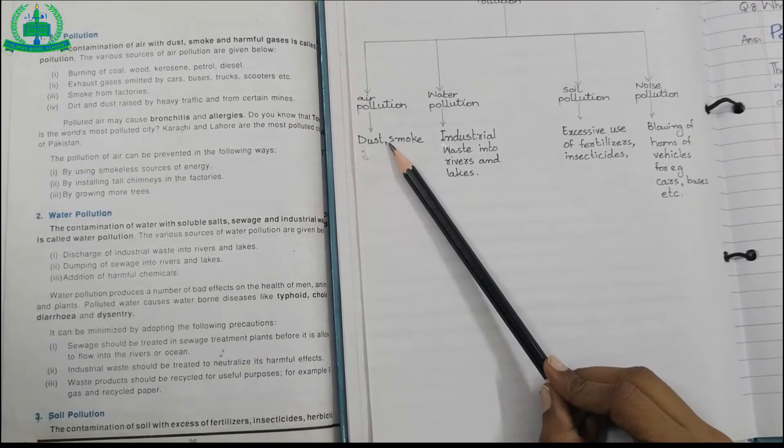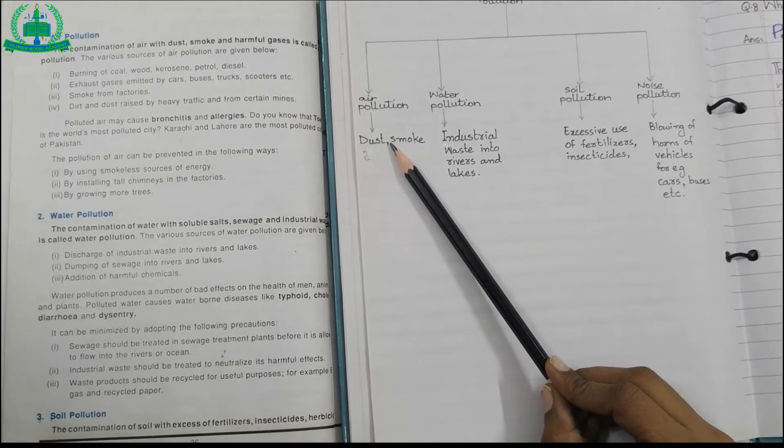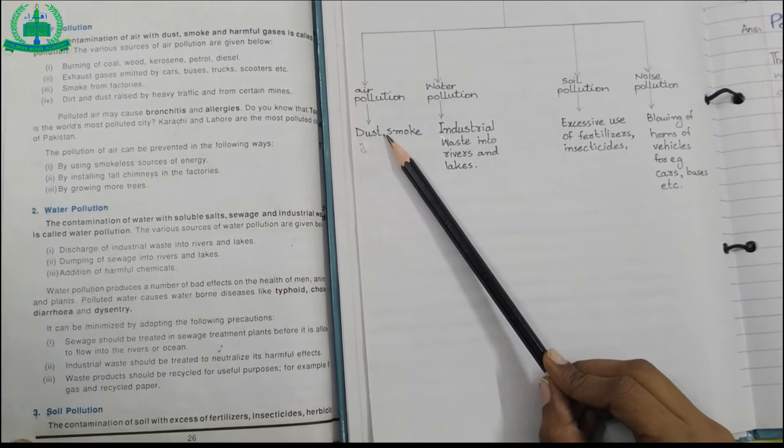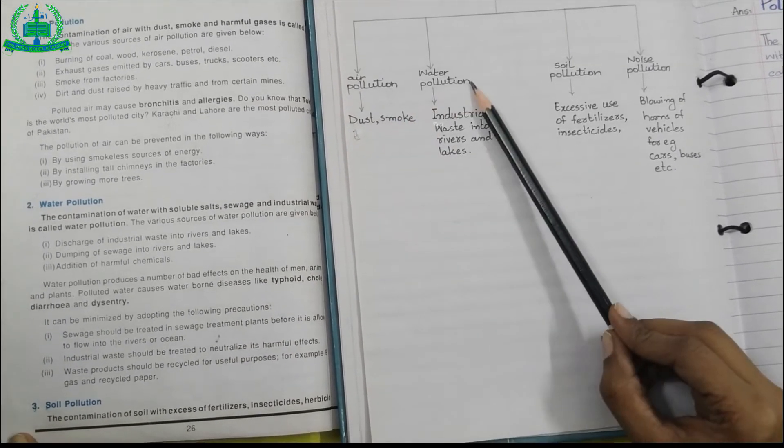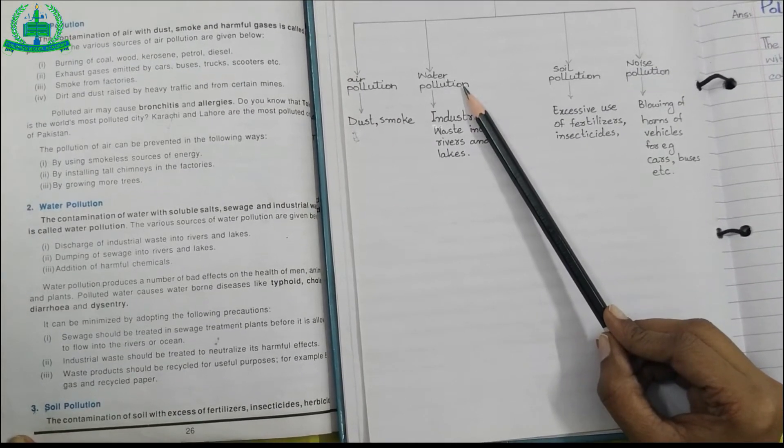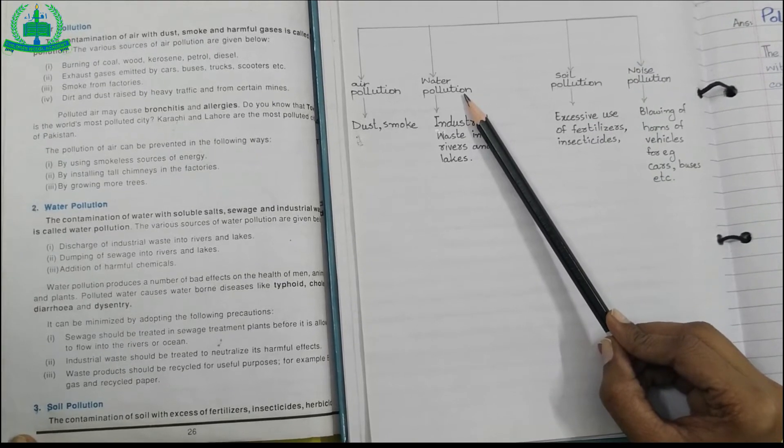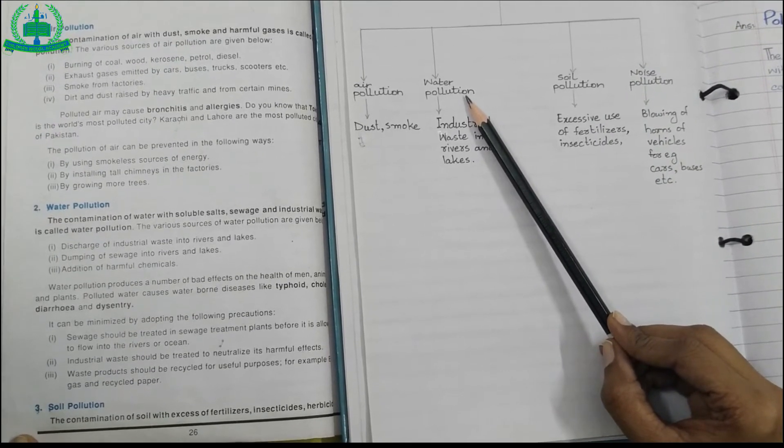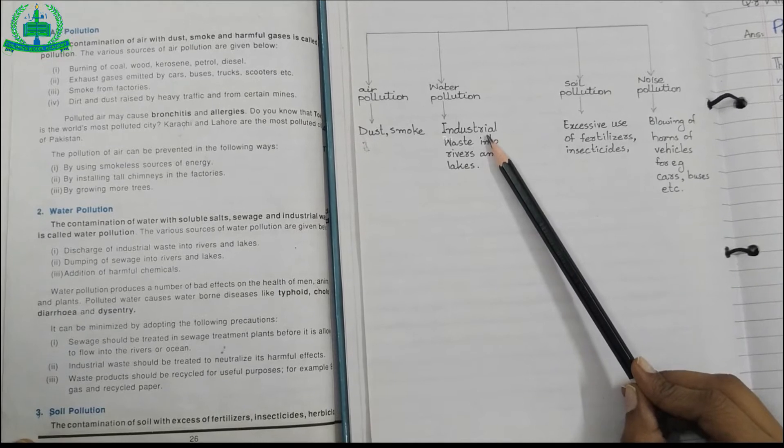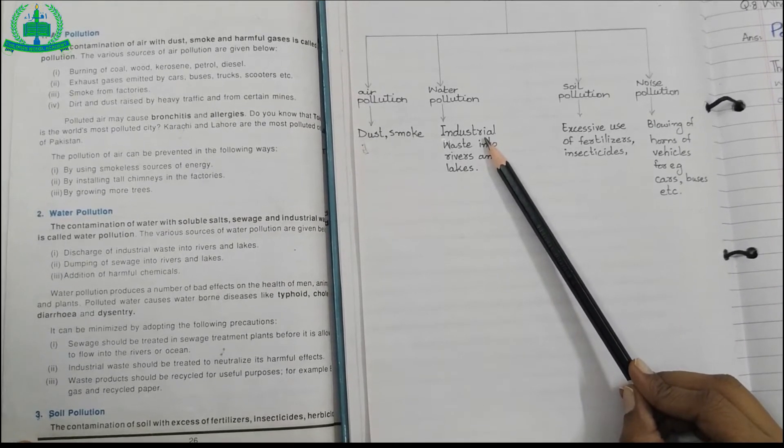Water pollution is the contamination of water with soluble salt, sewage, and industrial waste. For example, discharge of industrial waste into rivers and lakes, dumping of sewage.